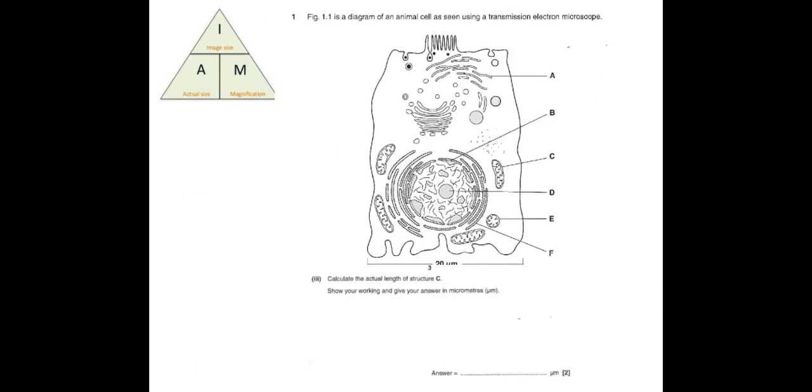Now the slightly more complicated ones, here's an example of an exam question, involve a scale bar which you can see here at the bottom. And I'm asked to calculate the actual length of structure C which you can see here, the mitochondria, and it also gives me what units it wants as well which is in micrometers.